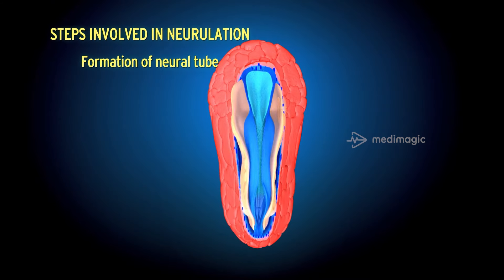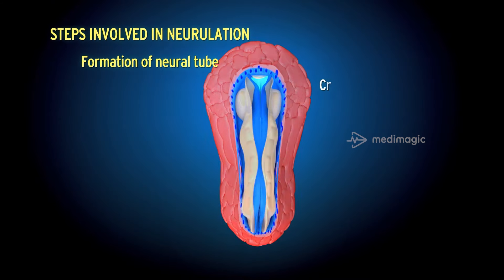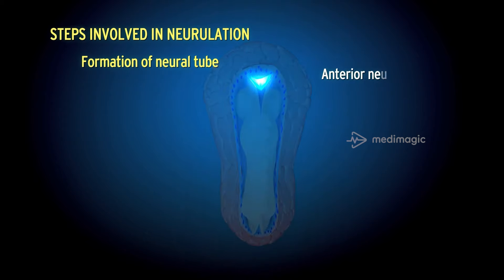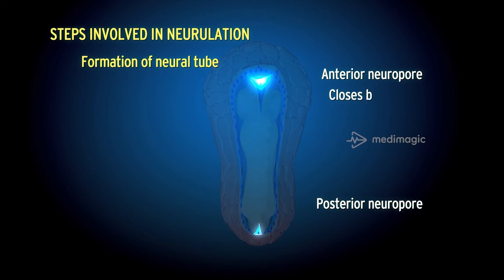Until the fusion is complete, the cranial and caudal ends of the developing neural tube remain open, forming the anterior neuropore and posterior neuropore, which communicate with the amniotic cavity. The anterior neuropore closes approximately by 25 days, and the posterior neuropore closes by 28 days.